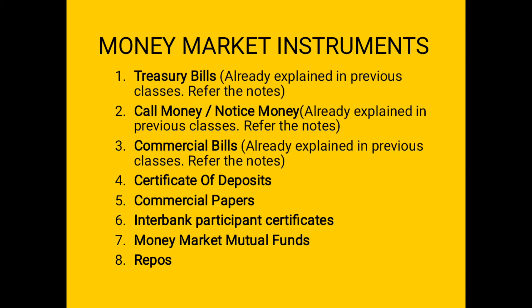The fourth one is certificate of deposits. Today we are going to study in detail what is a certificate of deposit. The fifth one is commercial papers. The sixth one is interbank participant certificate. The seventh one is money market mutual funds. And the eighth one is repos. This is a very important question — study each instrument in detail.